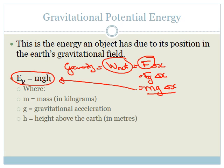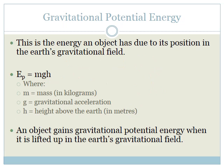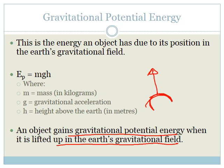Gravitational potential energy equals mass (in kilograms) times the acceleration due to gravity (in meters per second squared) times the height above the Earth (in meters). An object gains gravitational potential energy when lifted higher into Earth's gravitational field. The higher the object is above the Earth, the more EP it has. The mass doesn't change, and gravity basically doesn't change, so the only thing affecting EP is the height.